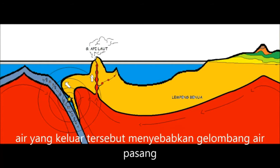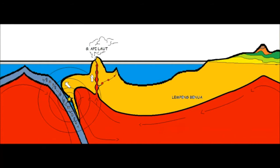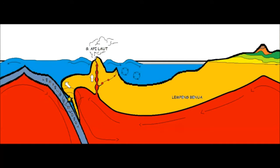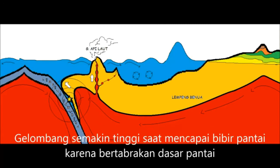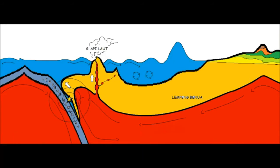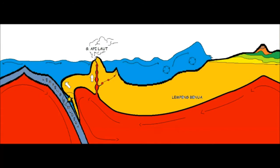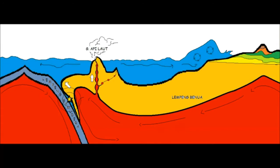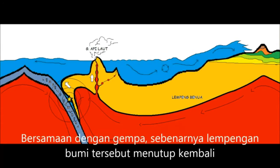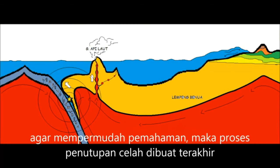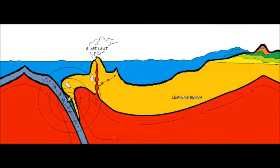Air yang keluar tersebut menyebabkan gelombang air pasang. Gelombang semakin tinggi saat mencapai bibir pantai karena bertabrakan dengan dasar pantai. Bersamaan dengan gempa, sebenarnya lempengan bumi tersebut menutup kembali. Agar mempermudah pemahaman, maka proses penutupan celah dibuat terakhir.